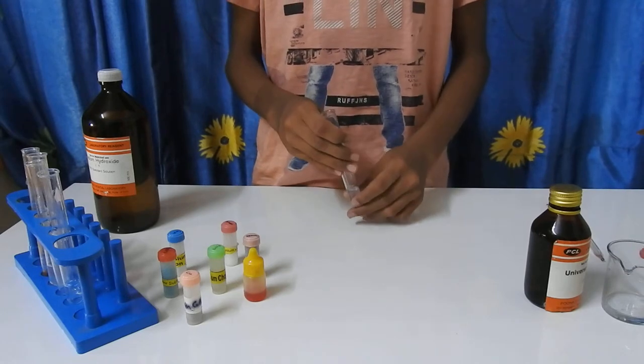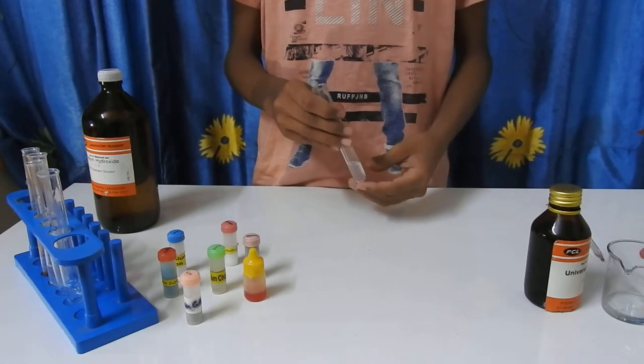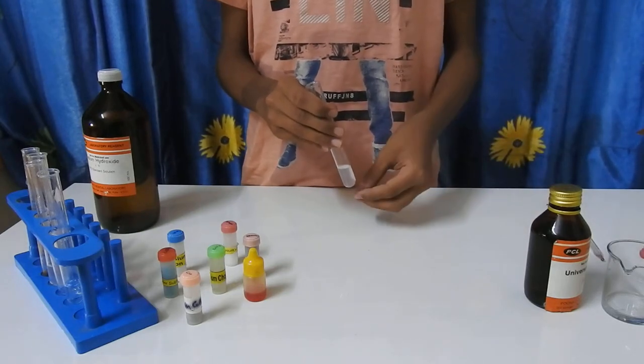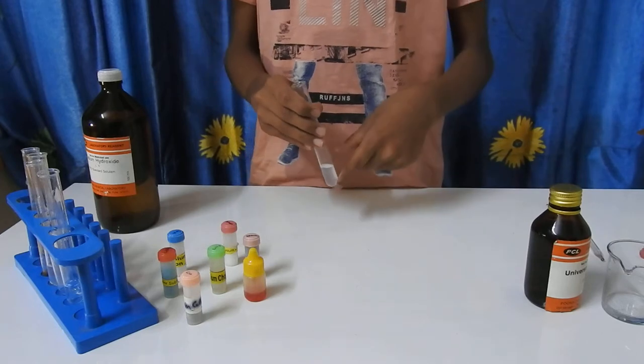Liquor ammonia is basic in nature. We have to add the universal indicator, which shows us the pH of the solution to prove that it is basic in nature.